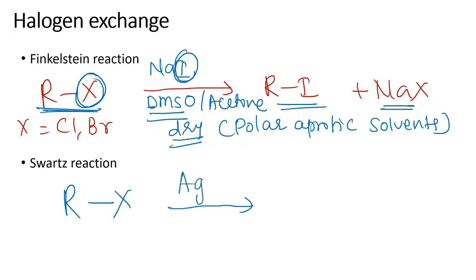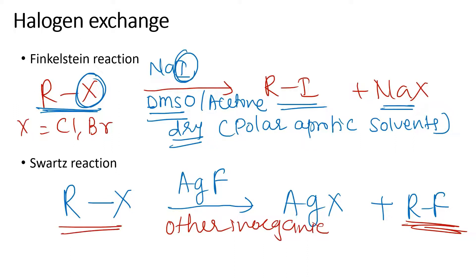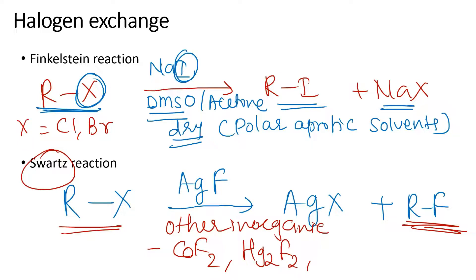In the Swartz reaction, when the alkyl halide reacts with silver fluoride, it will give silver halide plus alkyl fluoride. So the method of preparation for alkyl fluoride can be done with the help of silver fluoride. There are other inorganic reagents also available for carrying out this Swartz reaction — those other inorganic fluorides could be cobalt fluoride or mercuric fluoride — as reagents for the halogen exchange to prepare alkyl fluorides.